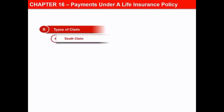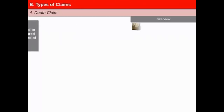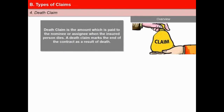In this next video of the lesson Payments under a Life Insurance Policy, we will learn about death claims. A death claim is the amount which is paid to the nominee or assignee when the insured person dies. A death claim marks the end of the contract as a result of death. The procedure for settling a death claim is relatively complex as compared to maturity claims.